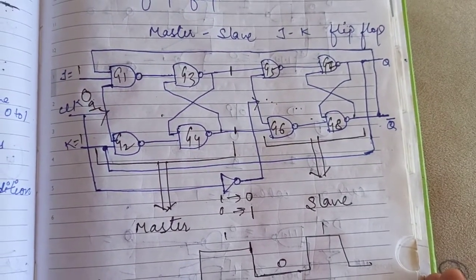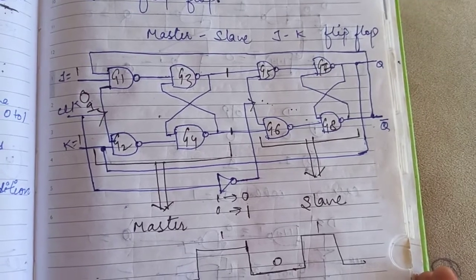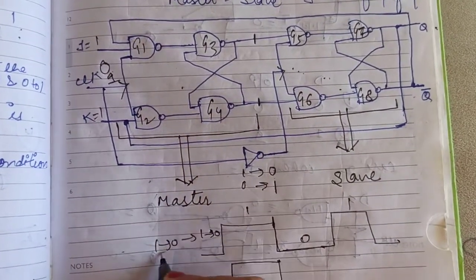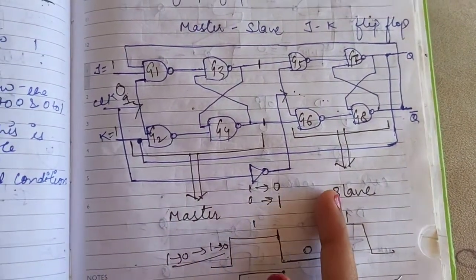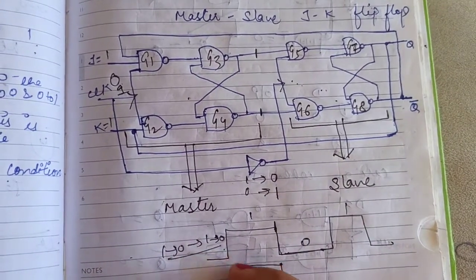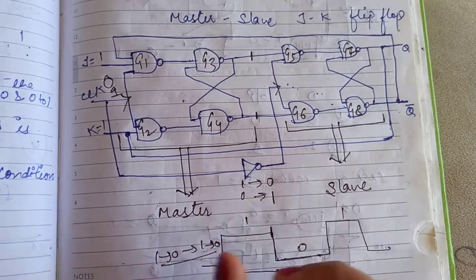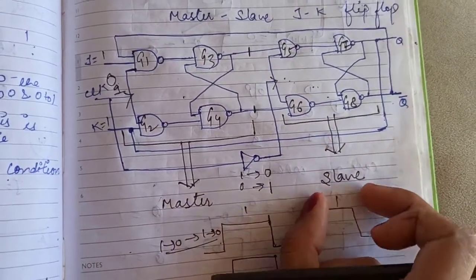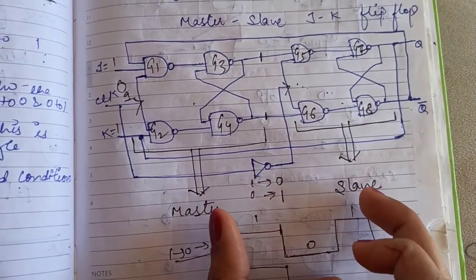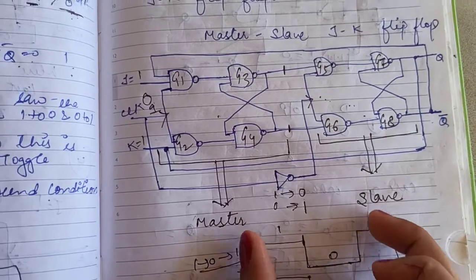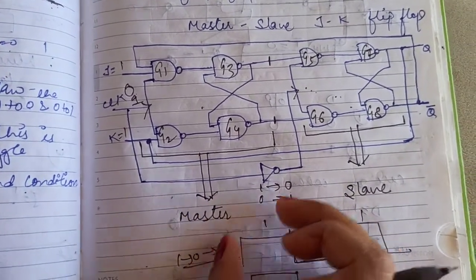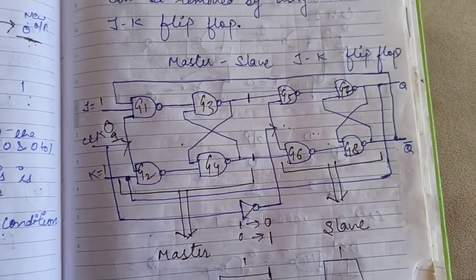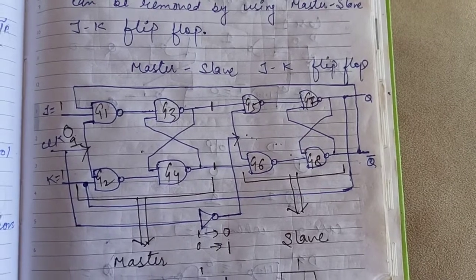By using this approach, we can remove the race around condition. The race around condition means there is no stable output — it races between 1 to 0, 0 to 1, and 1 to 0. But in the master-slave JK flip-flop, we can remove this condition easily. At any one time, only one circuit is active — either master or slave. Since only one circuit is active at a time, it will produce only one stable value, not toggle values. Thank you — this is all about the master-slave JK flip-flop.